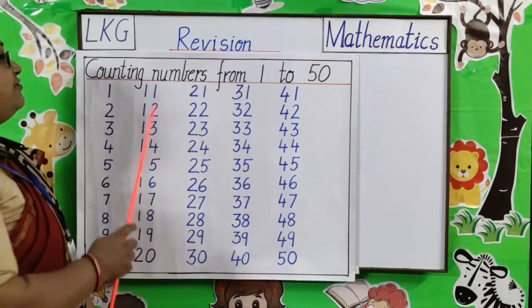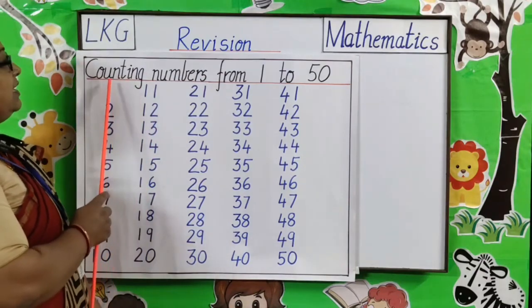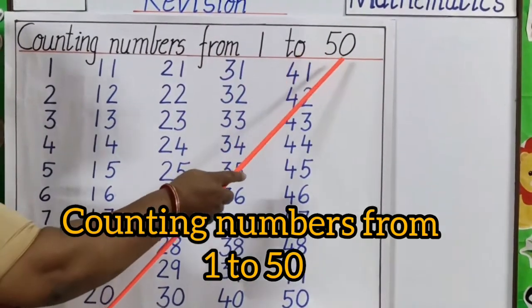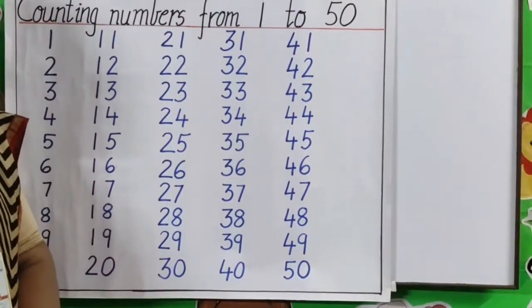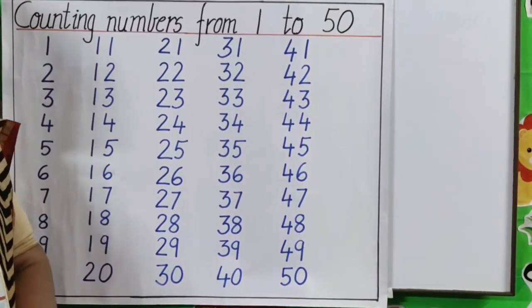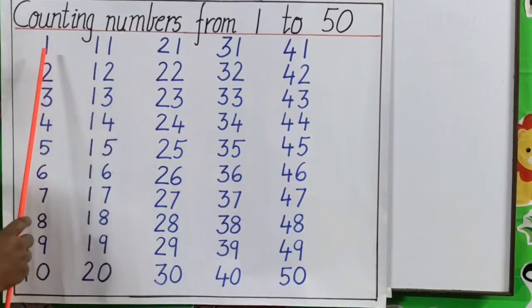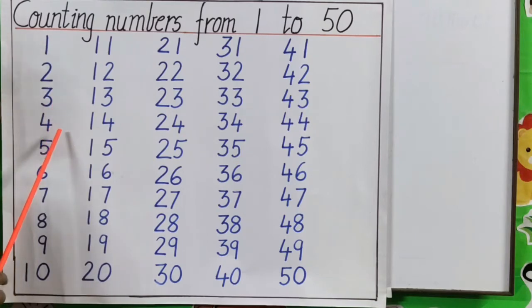Now our first topic is counting numbers from 1 to 50. Do you know counting children? Let's start. Repeat along with me. 1, 2, 3, 4, 5, 6, 7, 8, 9, 10. Now one thing we should always remember, 0 should be always below 9.